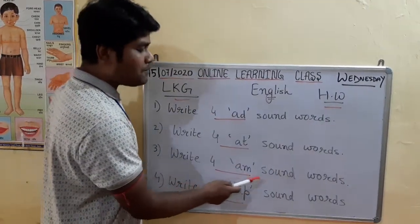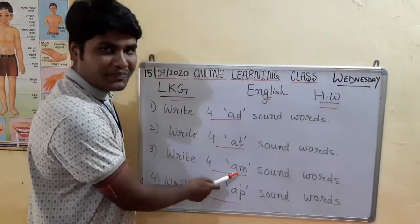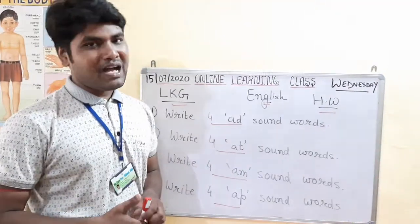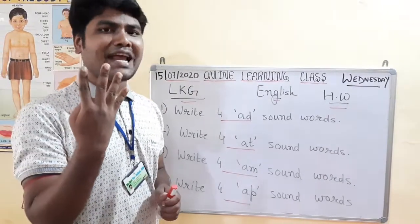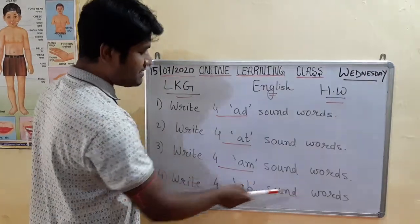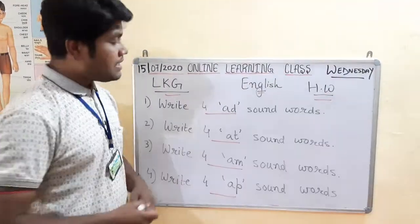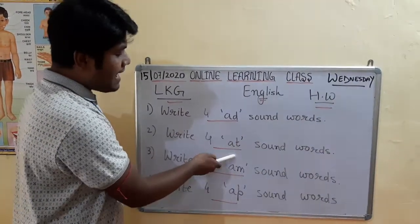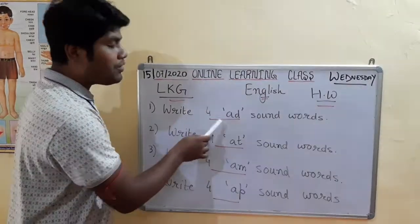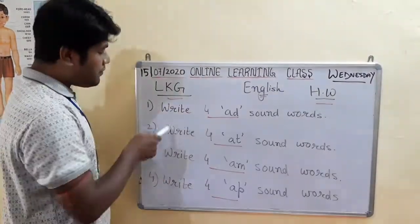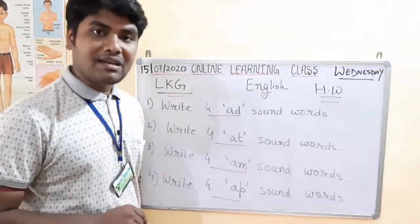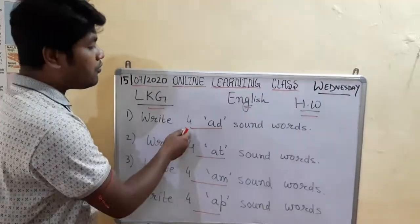There are AM sound words, AP sound words — you can see them in previous classes. Write 4 AM sound words, 4 AP sound words, and 4 AD sound words. For example, you can see them. First page: questions 1 and 2. Second page: questions 3 and 4. Parents, they will give you the questions.